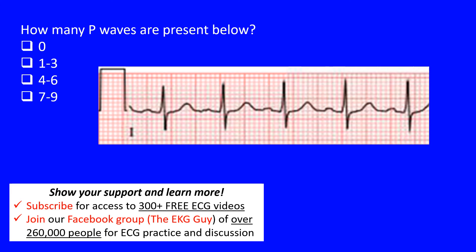We have a question that asks how many P waves are present in this rhythm strip. So this is about P waves — we have to identify how many we can see here in this lead one, from beginning all the way to the end.